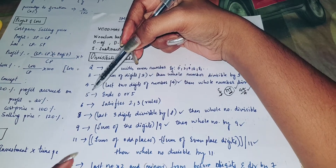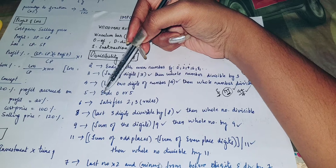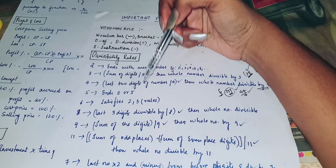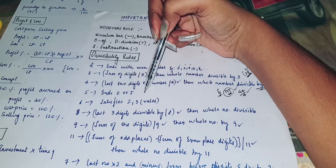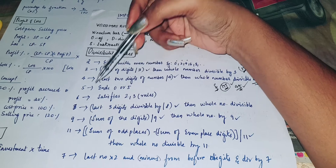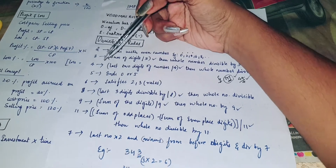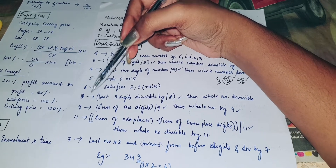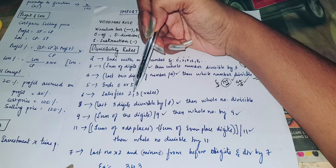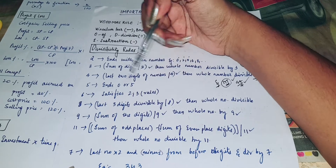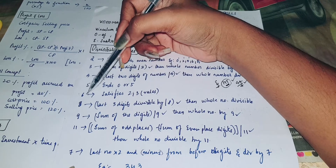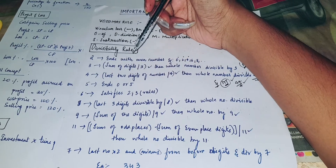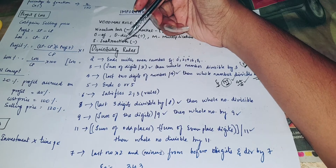Next, divisibility rule of 5: any number which ends with 0 or 5 is divisible by 5. And next is divisibility rule of 6: if both the 2 and 3 rules are satisfied, then automatically the number will be divisible by 6.